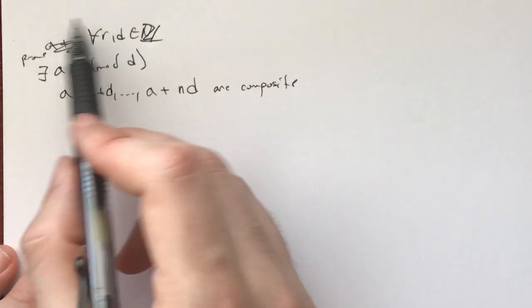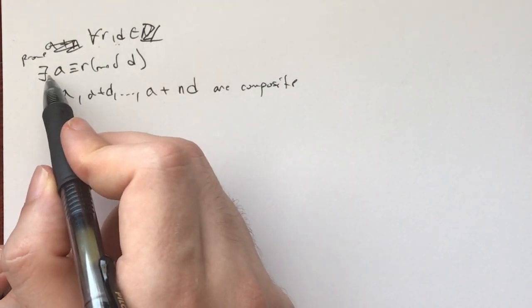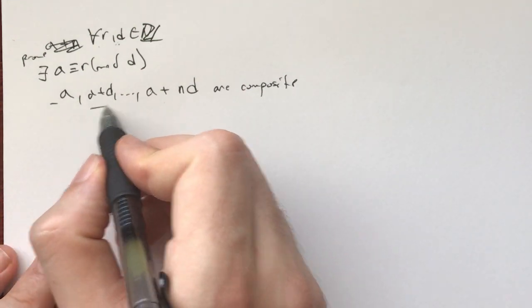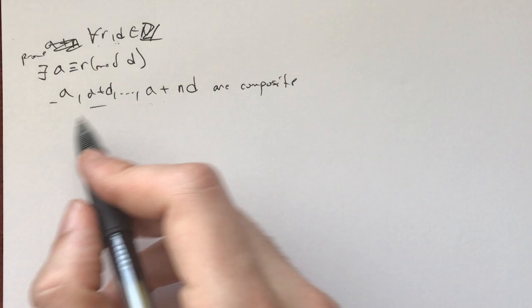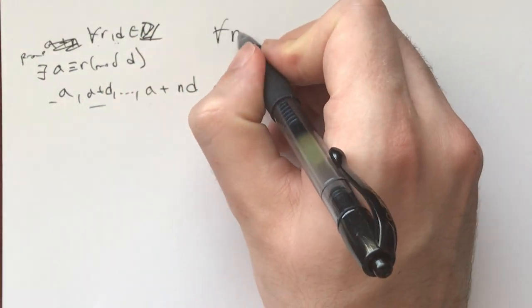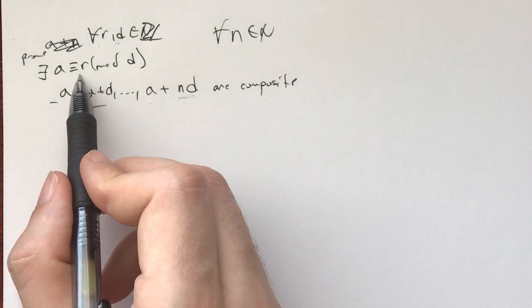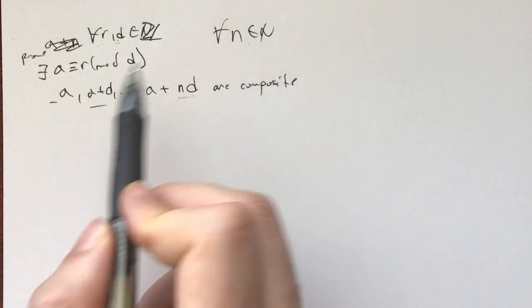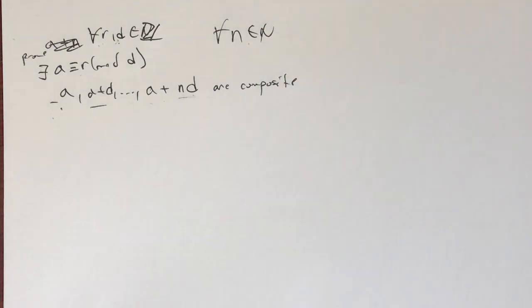So what the problem really says is for each r and d that are in the integers, there exists an a that's congruent to r modulo d such that a, a plus d, all the way till a plus nd are all composite. And what this arbitrary long thing means is that for each n that's in the positive integers, we can find an a that's congruent to r modulo d for each r, d, n, such that all of these numbers are composite.